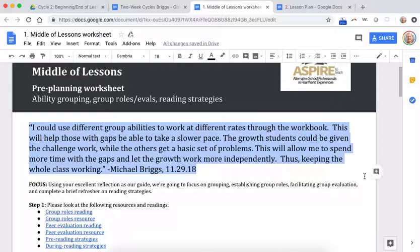Partially proficient, they probably need some supports to master that content. And then your unsatisfactory group, they're way behind, right? And so they might need a lot of work from you, time from you, and more supports.